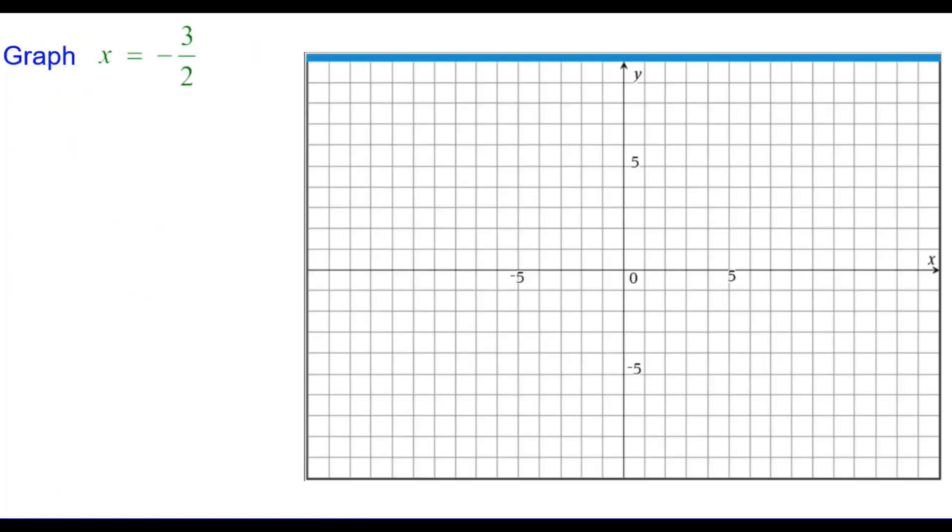Let's look at the graph x equals negative 3 halves. Here the constant is negative 3 halves. We need to create two ordered pairs with an x-coordinate of negative 3 halves.